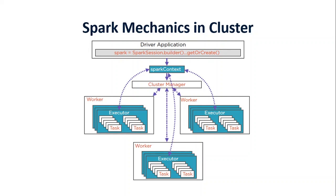Now let's look at the mechanics of Spark — how it works in a cluster. To work with Spark, we need a cluster. A cluster is basically a set of computers which work together. In the cluster, we write our Spark application on one node or computer, known as the driver program, which drives the application. In our driver program, the first thing we need to do is create a Spark context — or from Spark 2.0, we call it a Spark session — which works with the cluster managers to manage various jobs. The driver program and Spark session take care of job execution within the cluster. A job is divided into multiple tasks which are distributed over the worker nodes, and the worker nodes execute those tasks.